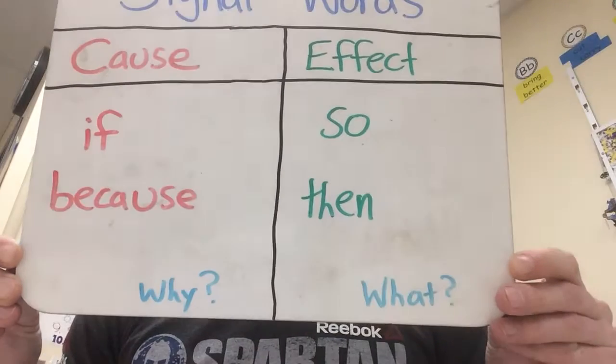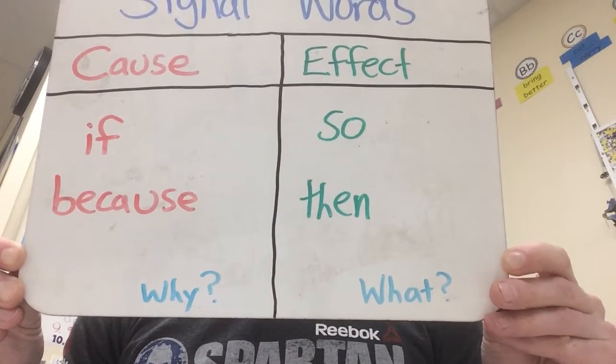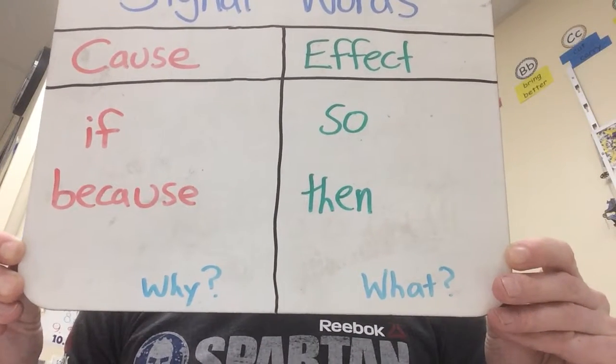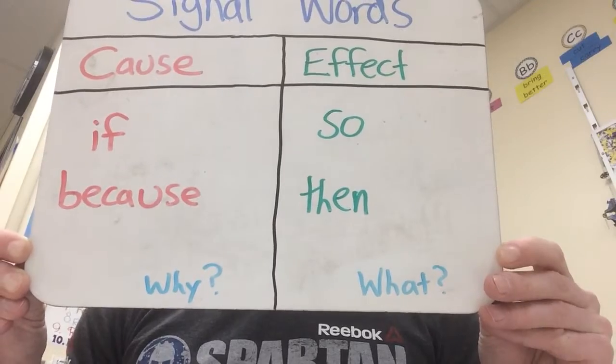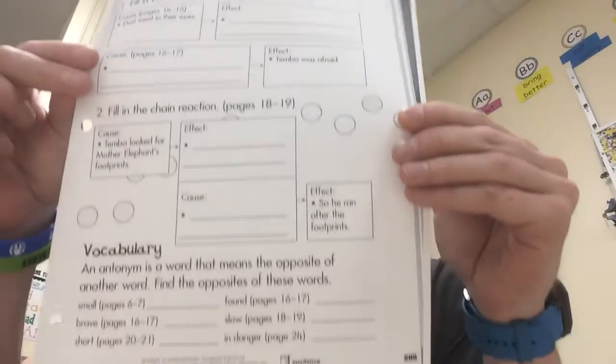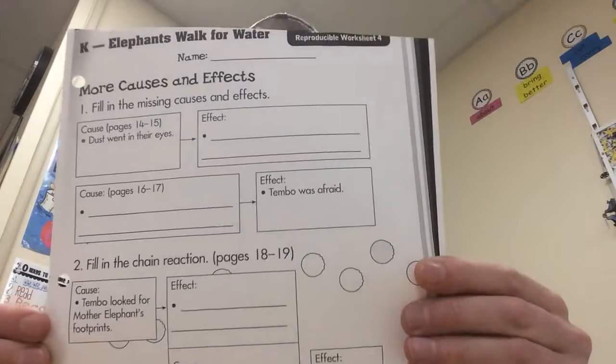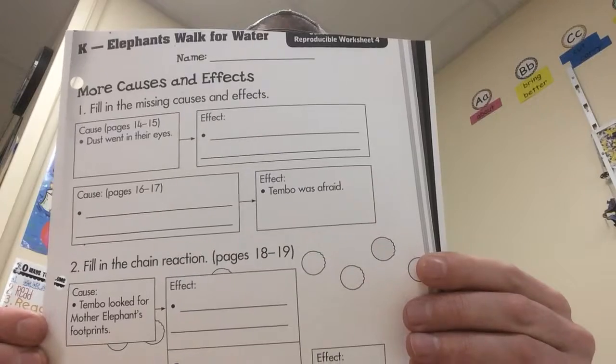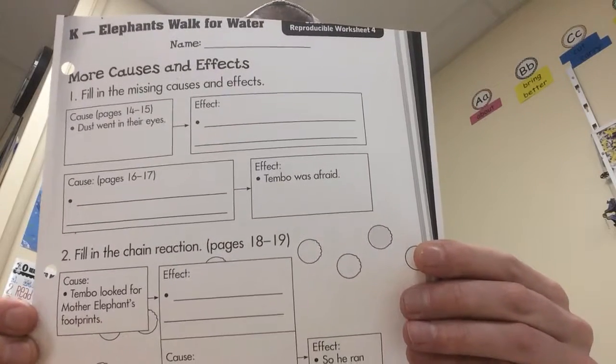Signal words for cause are 'if' and 'because,' and signal words for effects are 'so' and 'then.' Your job today is to work on reproducible worksheet number four — it looks like this. So yesterday when you were working on your worksheet, you had to find just the effects of certain events.